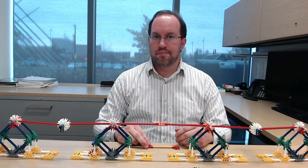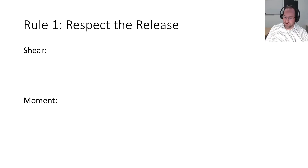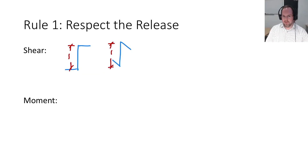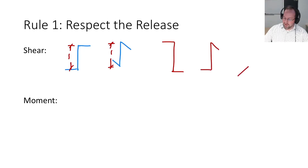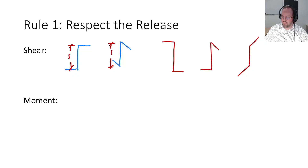Let's break this down with some rules. Our first rule for Mueller-Breslau is to respect the release — we can only have one release at a time, and it always takes a very particular shape. For shear, there are only two options at the release: a jump of one going up with the slope in equal to the slope out. Things that are not allowed: a jump of one downward, a change in slope, or a continuously increasing shape. At best you can have a horizontal in and horizontal out, or a downward slope in and downward slope out.